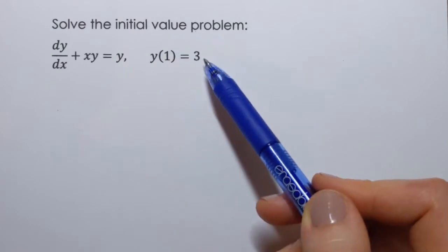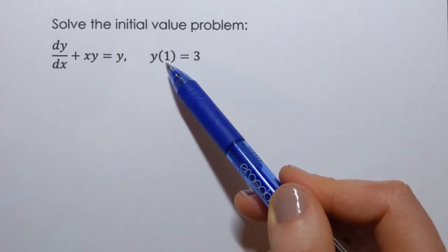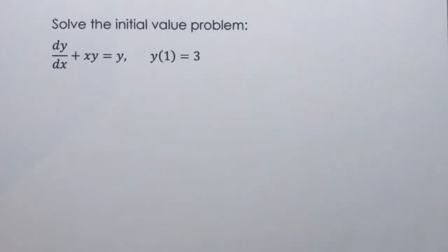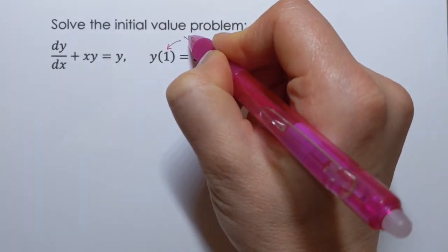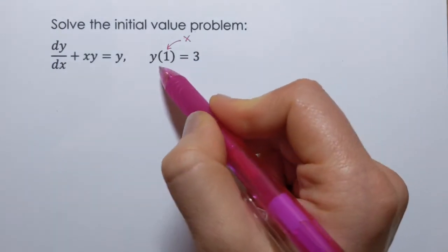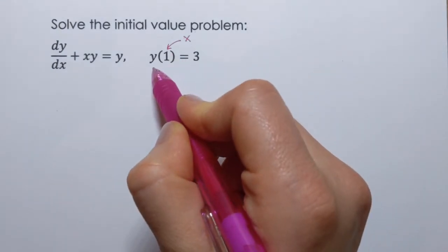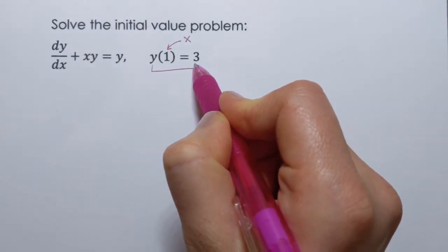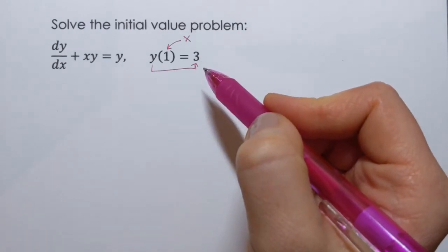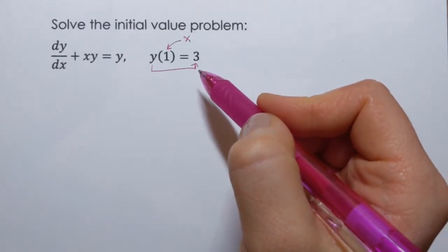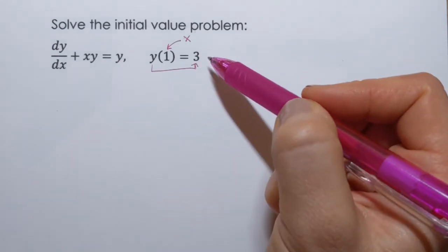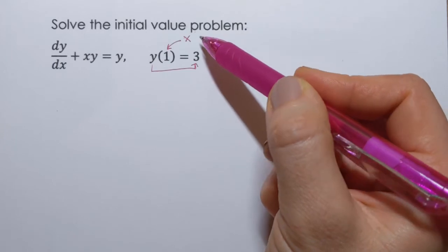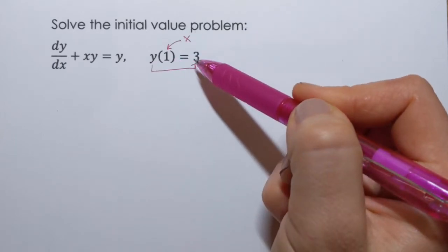Well remember this is function notation y of 1 equals 3 and when we look at the function notation what stands inside represents x and what that equals to is y. In other words we will have to find one specific function from the family of functions representing solution such that for that function when x equals 1, y equals 3.